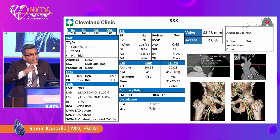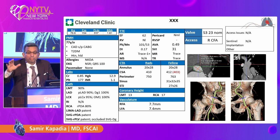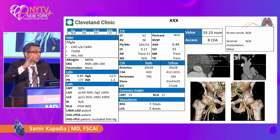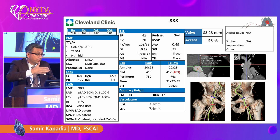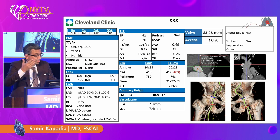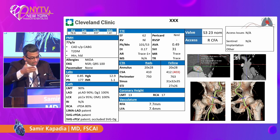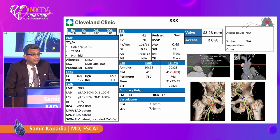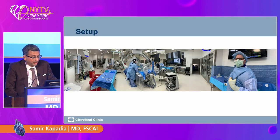This is the slide that we make for all patients — all of our fellows make this so that we have it in the cath lab. This is very important because all the patients look equal or similar. It includes history, CT analysis, and coronary heights, and what are the important things for the patient.